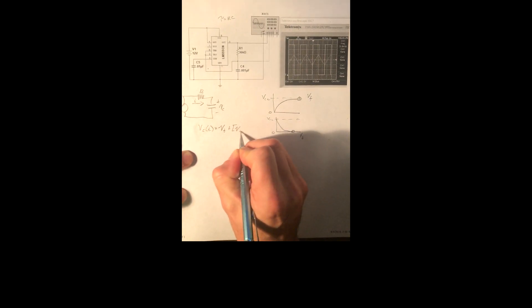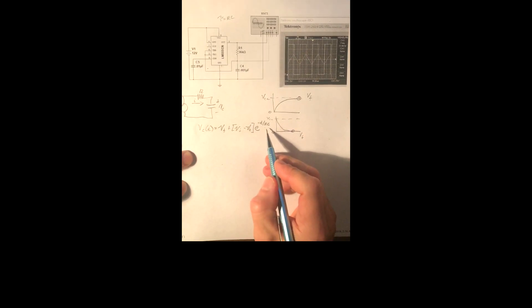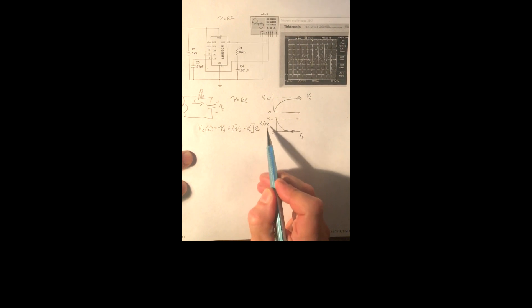If you want to see this derivation, please go to my website and check it out. I go through this analysis in a little more detail. The equation we're going to use is that V sub c of t — the charge on our capacitor at any point in time t — is equal to V sub f, plus V sub i minus V sub f, times e to the minus t over RC. The RC time constant is called tau, which is just equal to RC.